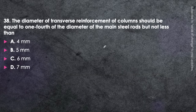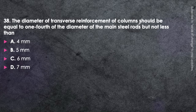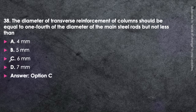Next question: The diameter of the transverse reinforcement of columns should be equal to one-fourth of the diameter of the main steel rod but not less than 6 mm — option C. This refers to the ties or shear reinforcement. It is specified in the IS-456 video, the link of which is in the description box.